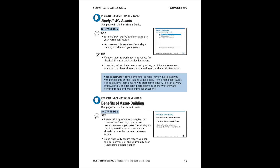The next activity is the apply-it: My Assets, on slide seven. Have participants look at categories for physical, financial, and productive assets, and give them time to answer questions related to each asset type. If needed, refresh their memories by asking them to name an example of a physical asset, a financial asset, and a productive asset. This will really anchor the learning, because as we go through this module it's going to be very important that participants understand these distinctions.